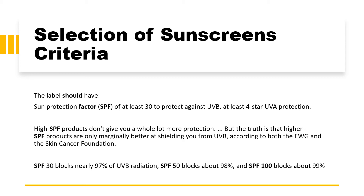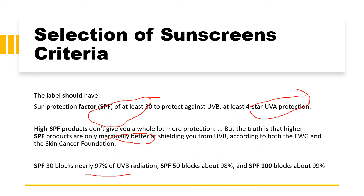The recommendation is to use a minimum of SPF 30 along with 4-star UVA protection. Higher SPF products are only marginally better at shielding from UVB radiations. SPF 30 blocks nearly 97% of UVB radiations, SPF 50 blocks 98%, and SPF 100 blocks 99% — so even the highest SPF does not provide 100% protection.